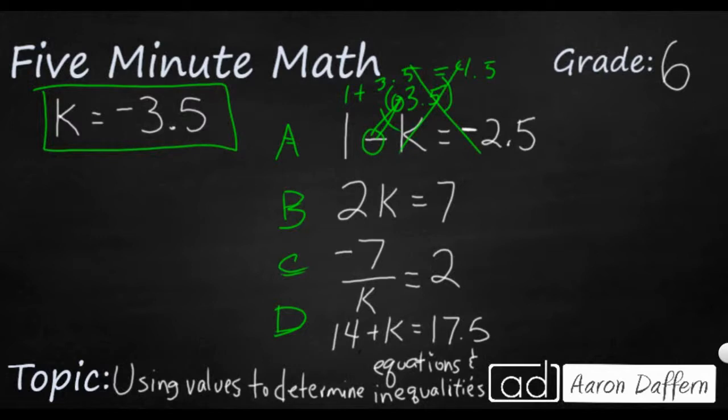So let's put our negative 3.5 in here. So 2k, that's pretty simple, 2 times negative 3.5. So we are going to have, well 3.5 times 2 is going to be 7, but problem is, this negative is going to remain negative. So this is actually going to equal negative 7, not 7. So if this happened to be a negative 7, that could work. But in this case, it's not a negative 7, so that's not going to work.